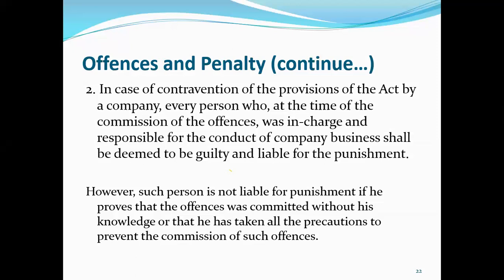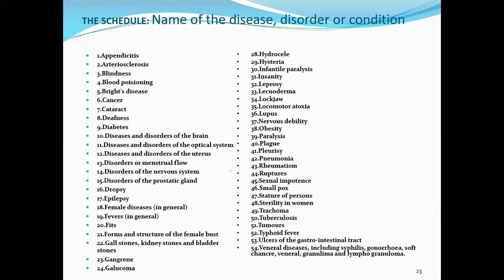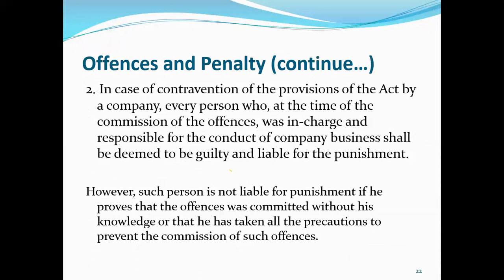However, such a person is not liable for punishment if he proves that the offense was committed without his knowledge, or that he had taken all precautions to prevent the commission of such an offense. On first conviction, the punishment is six months imprisonment and fine or both. On subsequent conviction, the punishment doubles — that is, one year or 12 months imprisonment, or fine, or both.